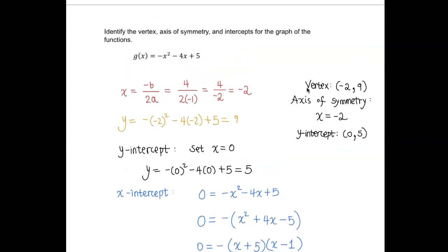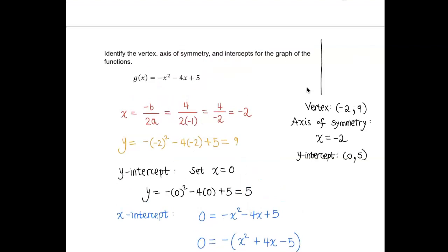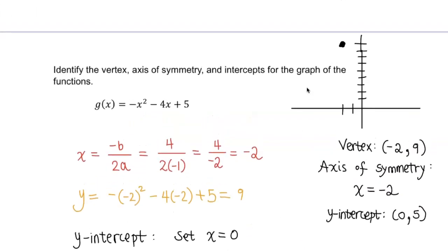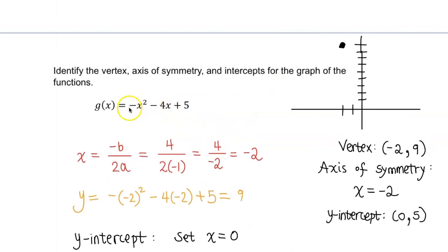So this graph, if I just try to sketch a picture real quick, we'll go 2 to the left but up 9: 1, 2, 3, 4, 5, 6, 7, 8, 9. So it was way up there. But look at the leading coefficient sign. This is a negative quadratic, which means we're going to have a graph that's going down, downward.